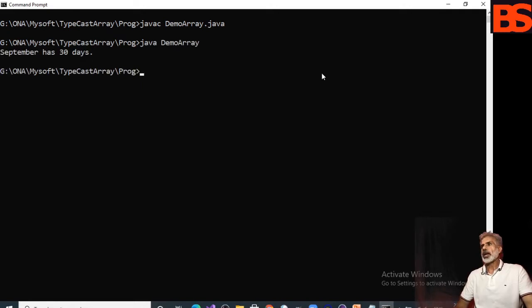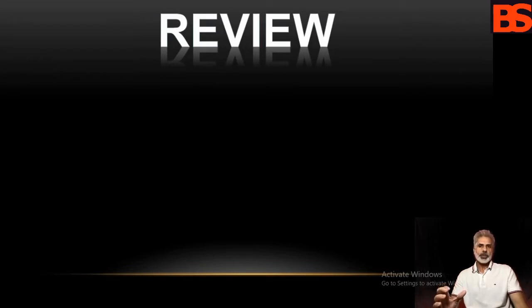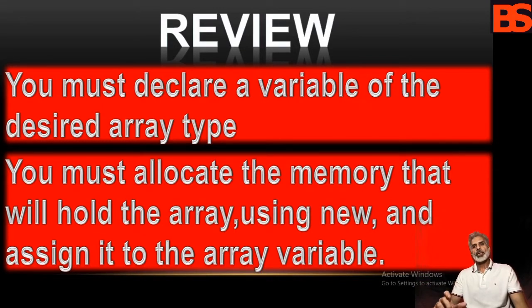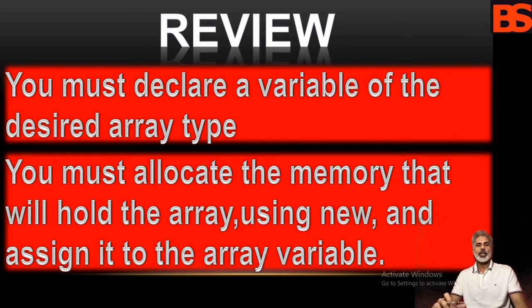September has 30 days — that is the output of our program. To review: obtaining an array is a two-step process. First, you must declare a variable of the desired array type. Second, you must allocate the memory that will hold the array using 'new' and assign it to the array variable. In Java, all arrays are dynamically allocated. Once you have allocated an array, you can access a specific element by specifying its index within square brackets.